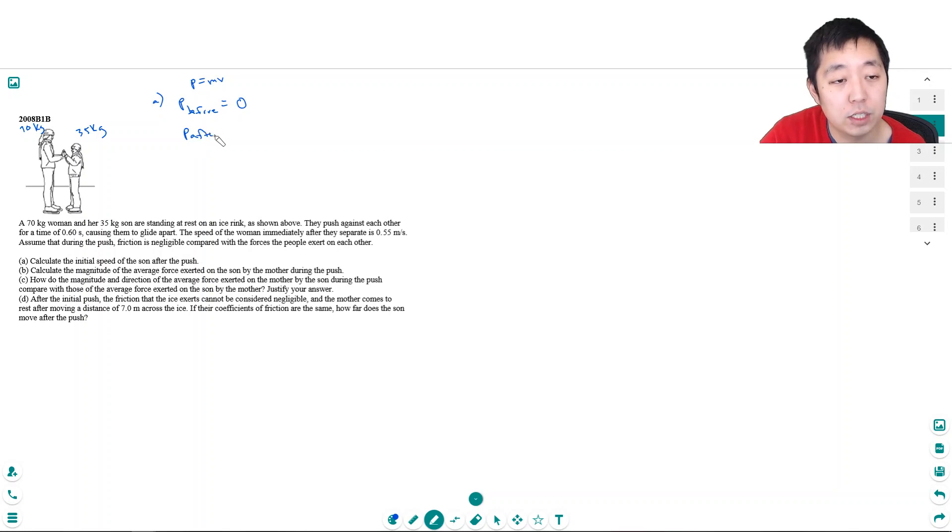But after they do this interaction, the woman is moving to the left at 0.55 meters per second, and presumably the son is going to move to the right at some velocity. Now momentum is a vector quantity, so this velocity has a sign value to it.